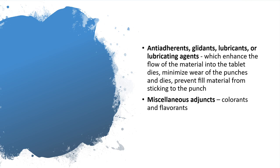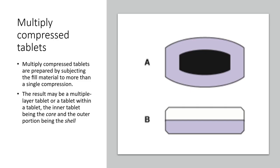The first type of tablet is your multiply compressed tablet. These are tablets that are formed when you compress twice. First you compress an inner tablet, then you add granules around the inner tablet, then compress again. What you will have is a bilayered tablet in which one tablet would most likely contain a different drug from the outer layer, physically separating the two drugs.